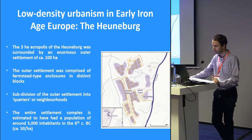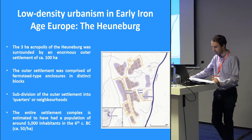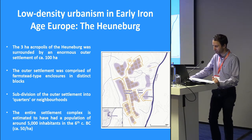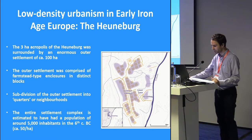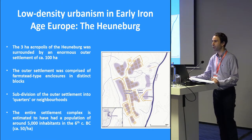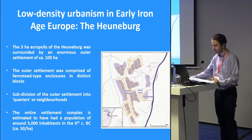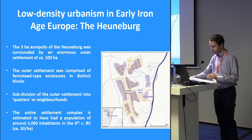Rather than being the result of a gradual population growth, the Heunenburg seems to have been created within a relatively short period of time, probably as the result of a political decision that would have brought together different population groups that previously were dispersed. However, this large agglomeration lasted for only two or three generations and was largely destroyed by a catastrophic fire around 540-530 BC. After this traumatic event, most of the exterior settlement was abandoned and the exotic mud-brick wall on the plateau was replaced by a wall of earthen timber, following traditional patterns.